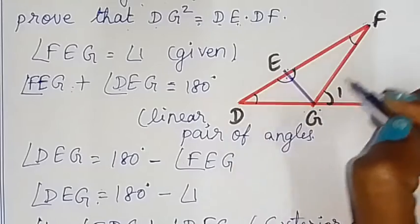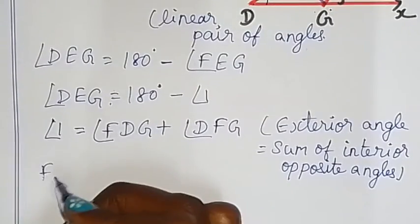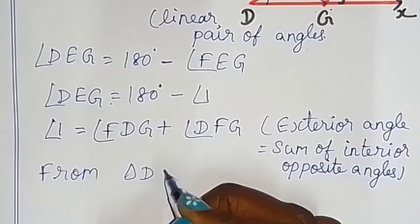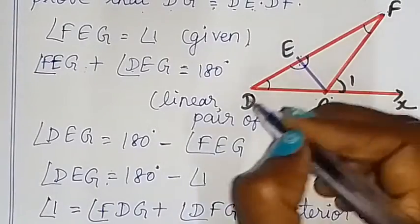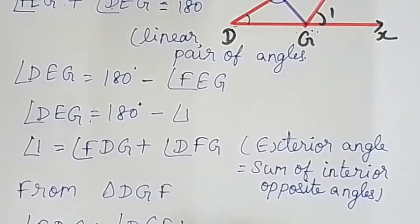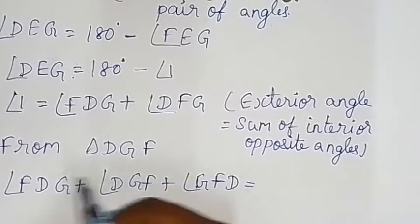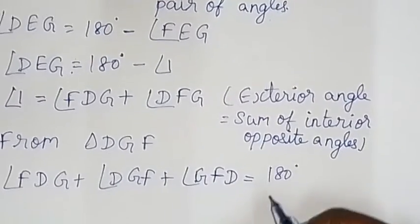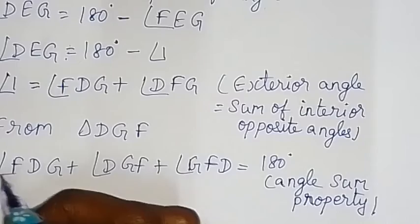Now we apply the angle sum property to triangle DGF. Angle FDG plus angle DGF plus angle GFD equals 180 degrees. The three interior angles of a triangle add up to 180 degrees — that is the angle sum property.